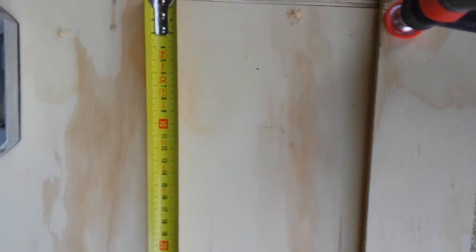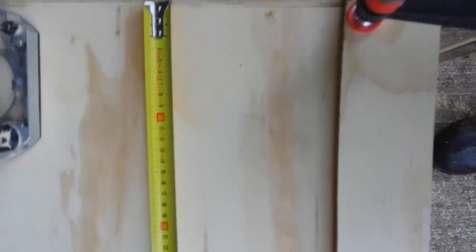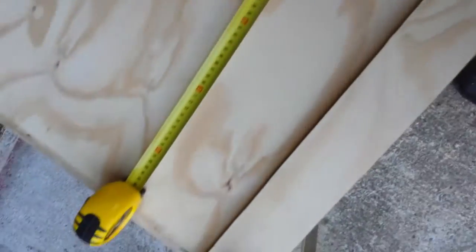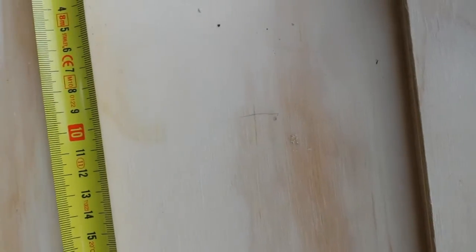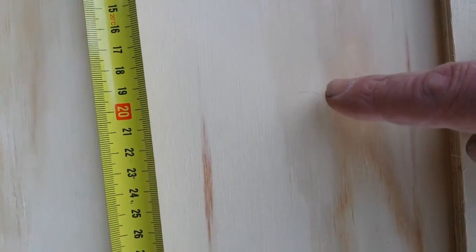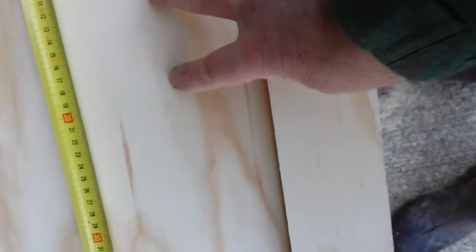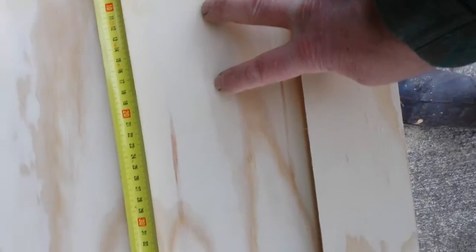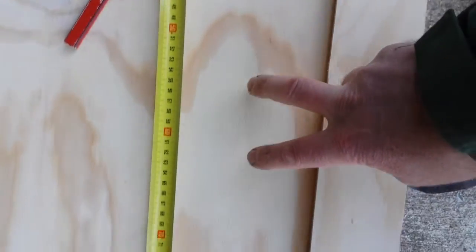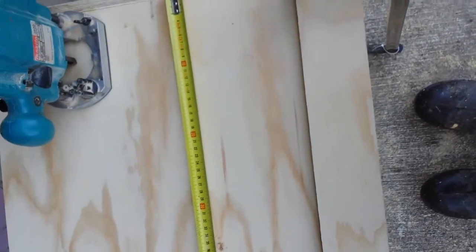But basically what I've done, and this is in metrics, sorry for all the Americans watching this. But every hundred along here, this box is exactly 900 long. What I've done is I've pencil marked, see just here at 100, and another one at 200, 300, 400. Because what I'm going to do is I'm going to cut a slot here, and then I'm going to miss one, slot and miss one, slot and miss one, and another slot.